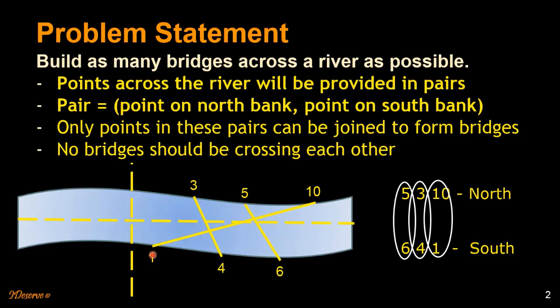We see that the bridge from 1 to 10 is crossing the other two bridges. If we remove the 3-4 bridge and the 5-6 bridge, we are left with only one bridge from 1 to 10 — that is not good enough. We want as many bridges as possible. So we remove the bridge from 1 to 10 and keep the bridges from 3 to 4 and 5 to 6, ending up with two bridges for this example.